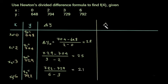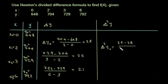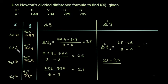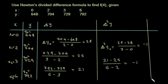Next we find the second divided differences: Δ²y₀ = (25 minus 28) divided by (3 minus 0) = minus 1. Then Δ²y₁ = (21 minus 25) divided by (6 minus 2) = minus 1.